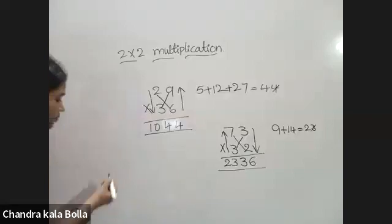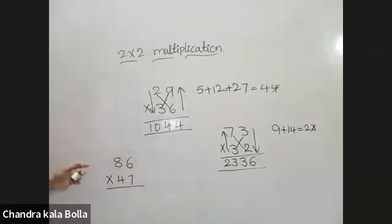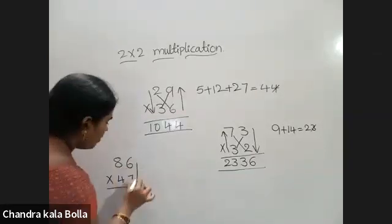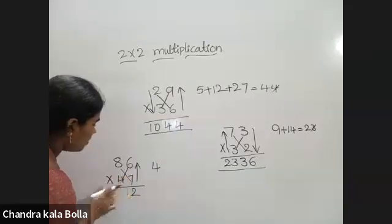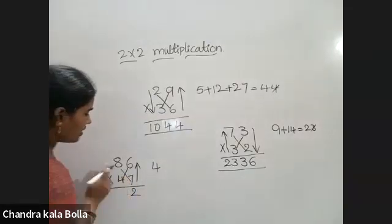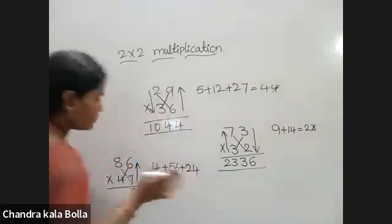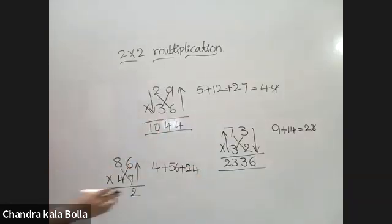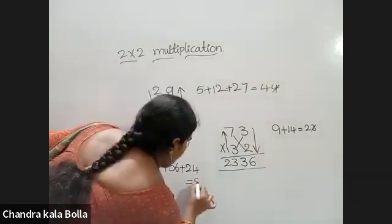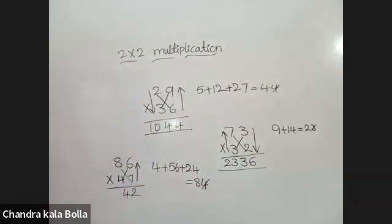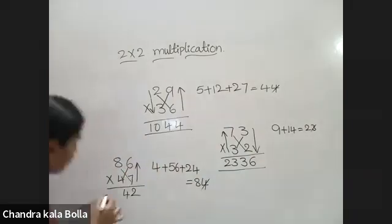Next example: 86 into 47. Up direction: 7 sixes are 42. Next, cross multiplication: 7 eights or 8 sevens — 7 eights are 56; next, 4 sixes are 24. So 24 plus 56 is 80. 80 plus carry 4 gives 84. Ones place value is 4, carry 8.